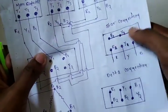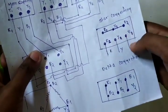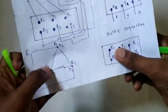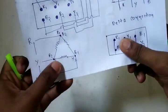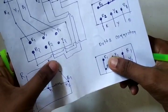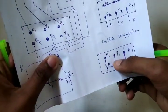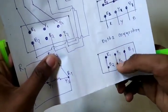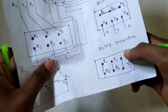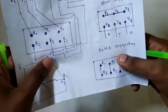R2, Y2, B2 start will be R1, Y1 supply. So this is delta connection. This is star and delta. We will use this diagram with cable and motor. We will use the motor with delta connection. Now we will use the star delta starter.